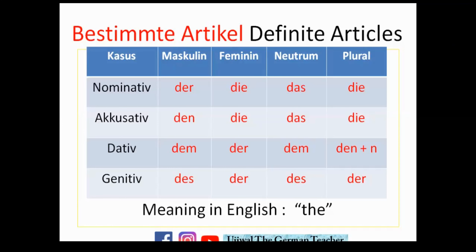Let's start with the definite articles — bestimmte Artikel. You have a table with the cases: nominative, accusative, dative, and genitive. The previous video was about this, and I will add the link in the video description so you can check how these cases work.